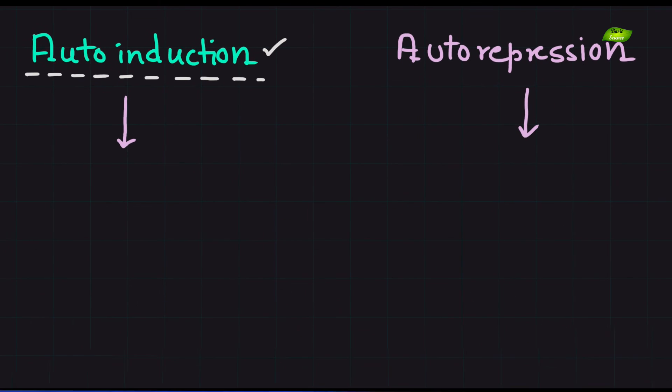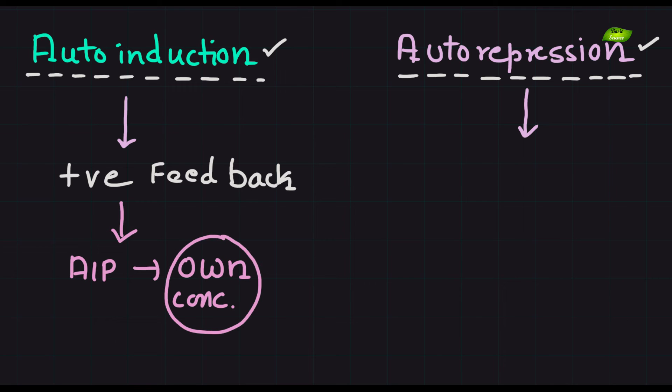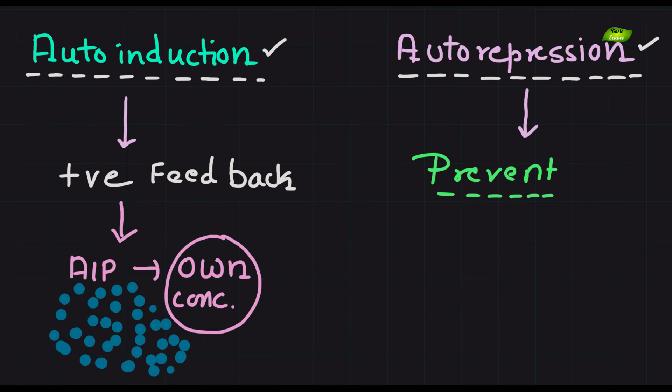Within the AGR system, a delicate balance is maintained between auto-induction and auto-repression. Auto-induction is a positive feedback loop where AIPs promote their own synthesis. This ensures a rapid response to changes in population density.